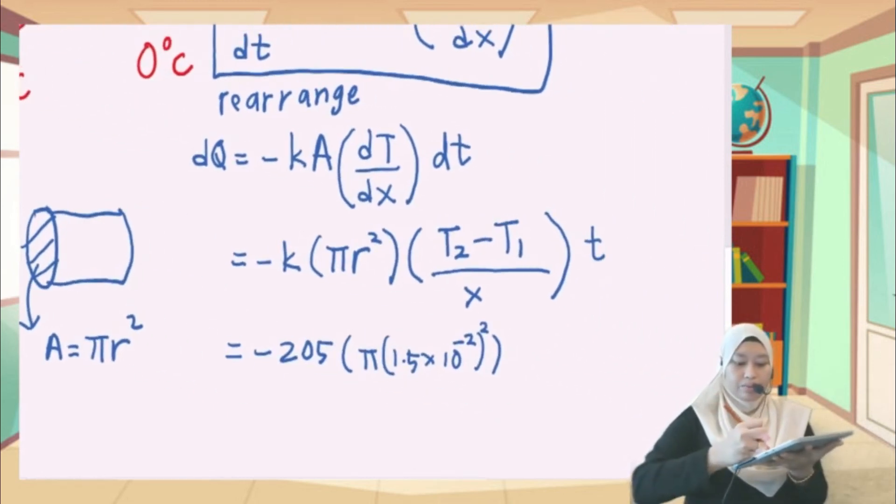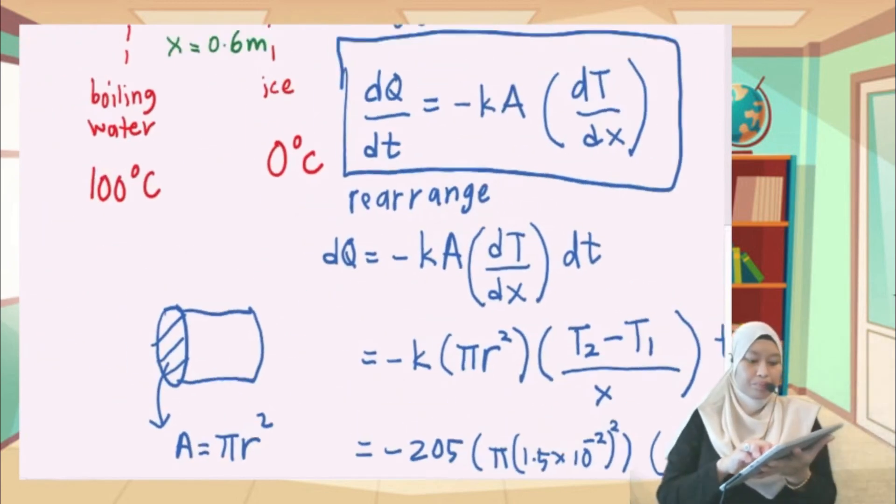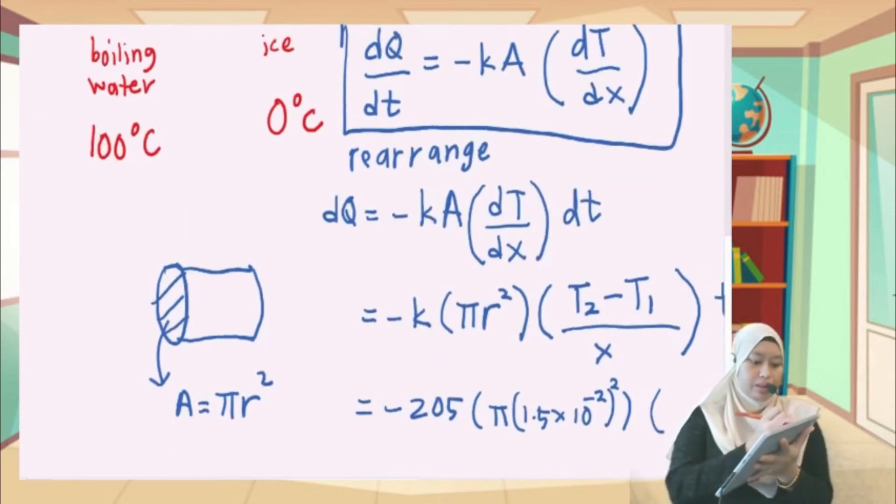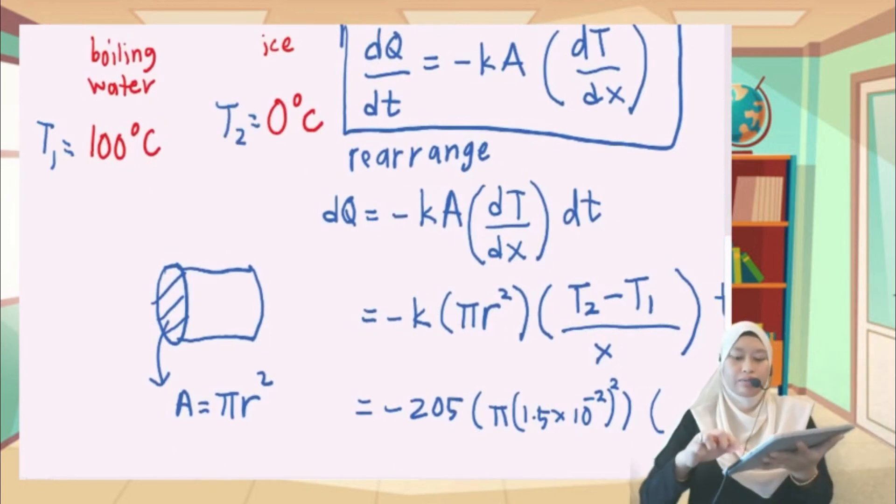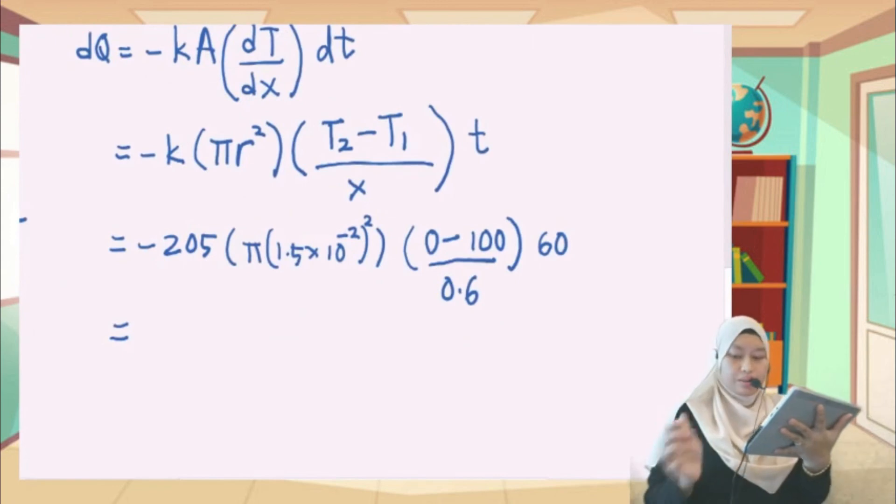T2 is basically the ice, because this is T1 and T2 is the ice. So it is going to be 0 minus 100, divided by the thickness 0.6, and the time is 60 seconds.